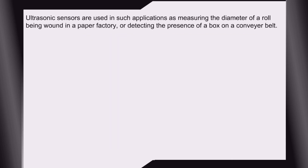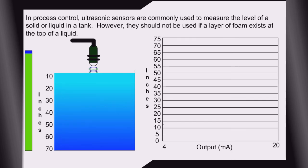Ultrasonic sensors are used in such applications as measuring the diameter of a roll being wound in a paper factory or detecting the presence of a box on a conveyor belt. In process control, ultrasonic sensors are commonly used to measure the level of a solid or liquid in a tank.